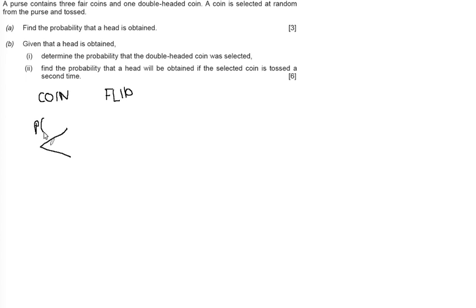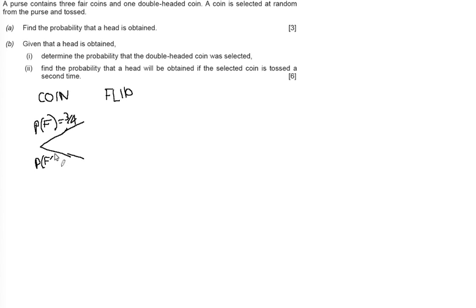The probability of selecting a fair coin, P(F), is equal to three-quarters. On the other branch, the probability of not having a fair coin — F complement — equals one-quarter. That's the first part of our tree diagram done.